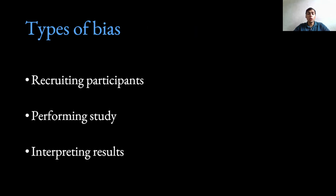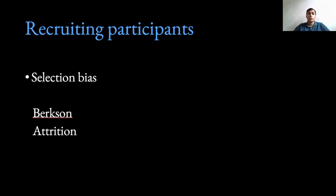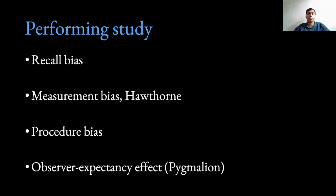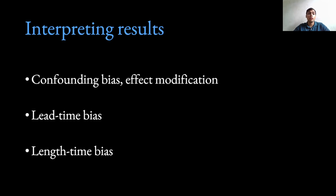The three most common places where bias can arise are: when we are recruiting participants for a study, when we are performing the actual study itself, and thirdly when we are interpreting the results. When recruiting participants, the common type of bias introduced is selection bias, which includes Bergson and attrition bias. While performing the study, we can have recall bias, measurement bias, procedure bias, and the observer expectancy effect, also known as the Pygmalion effect. When interpreting the results, we can have confounding bias, effect modification, lead time bias, or length time bias. All of these different types of biases will be explained further in the subsequent series.